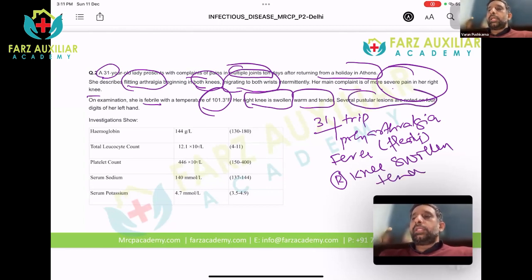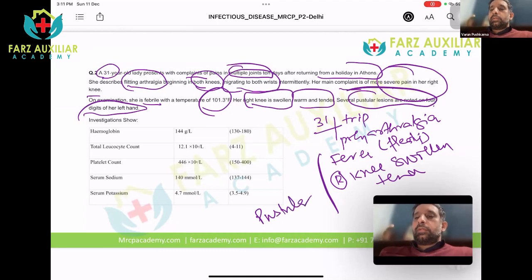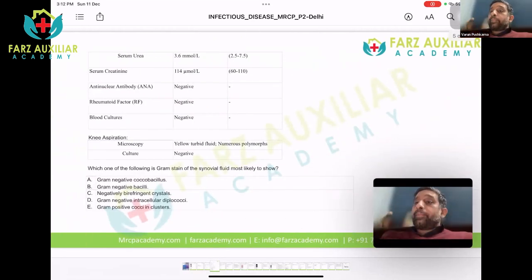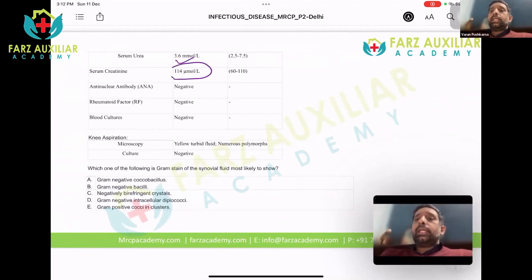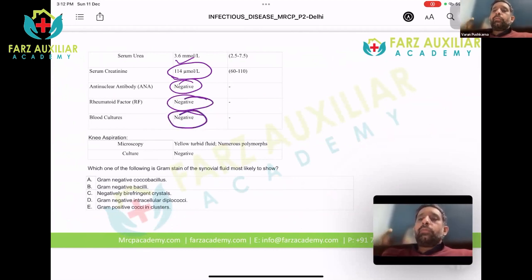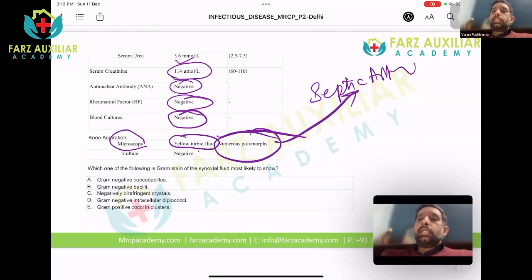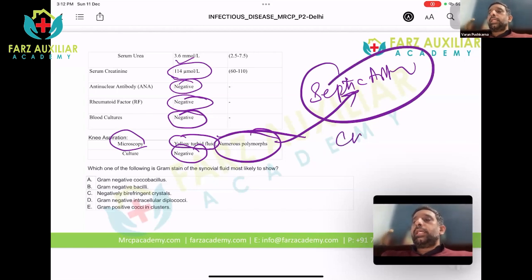Several pustular lesions are noted on the four digits of her left hand. Lab results: Hb 14.4, total leukocyte count elevated at 12, platelet count normal, sodium and potassium normal, serum urea normal, creatinine slightly elevated, ANA negative, rheumatoid factor negative, blood cultures negative. Knee aspiration shows yellow turbid fluid — septic arthritis — with numerous polymorphs but culture is negative.